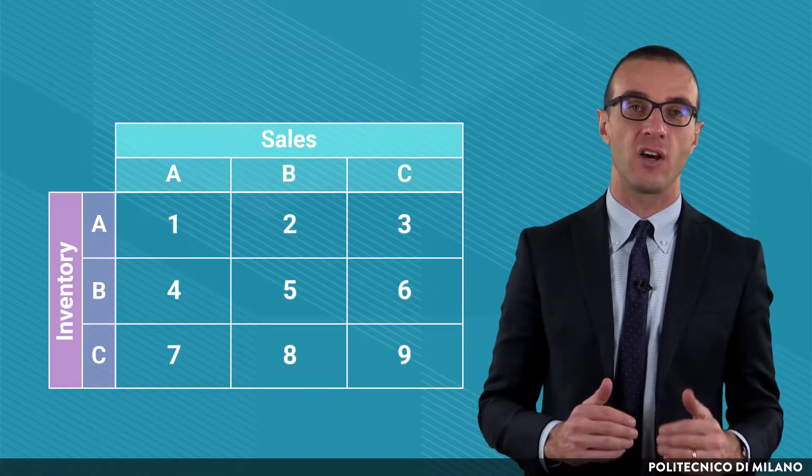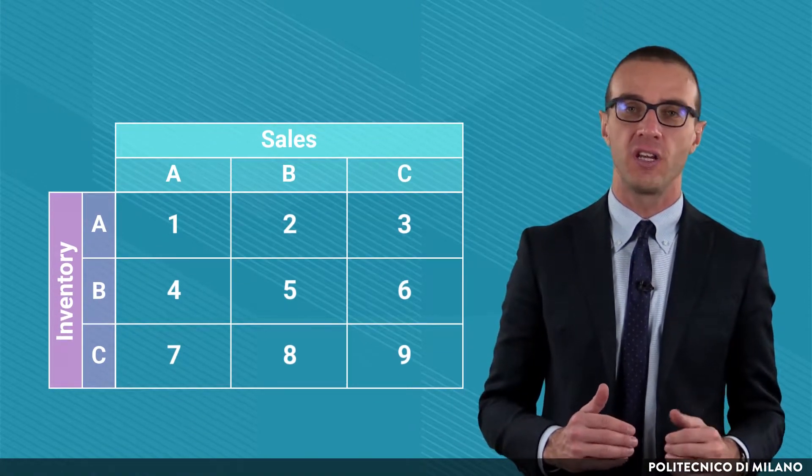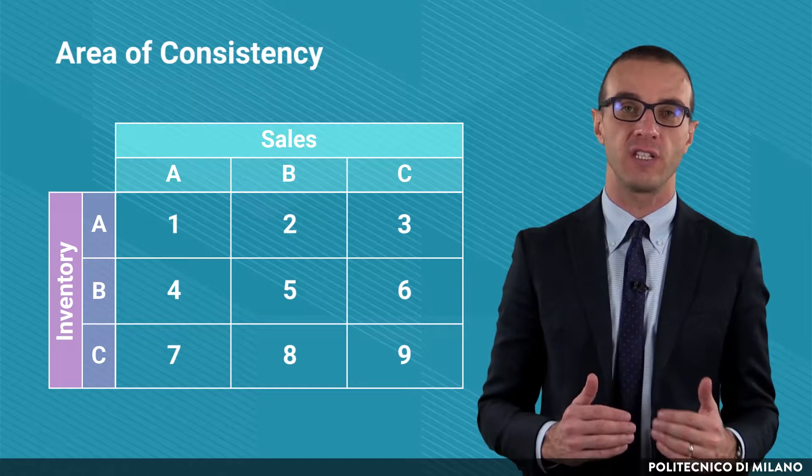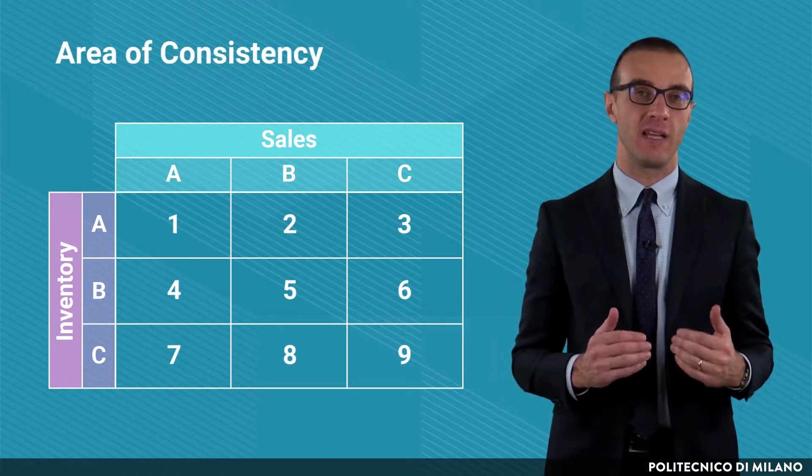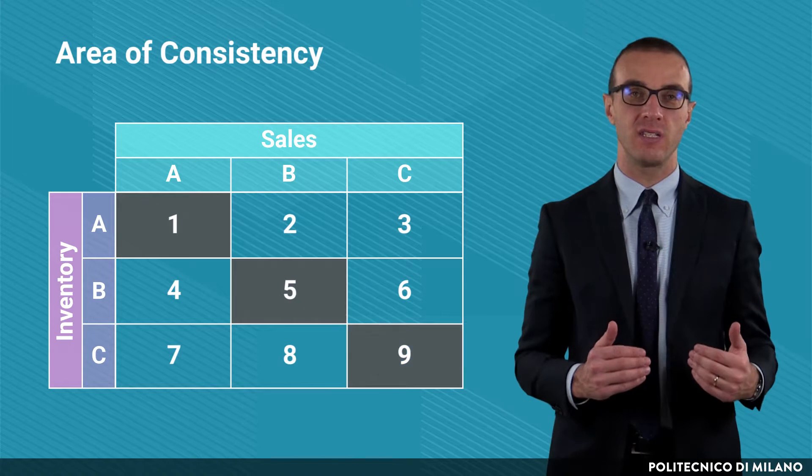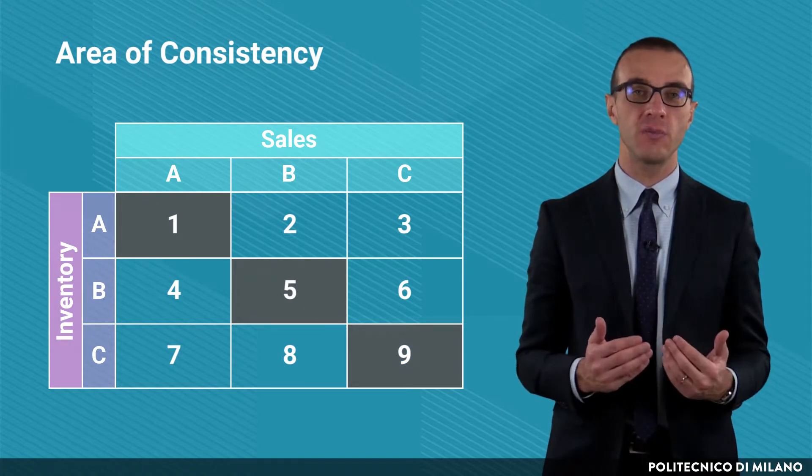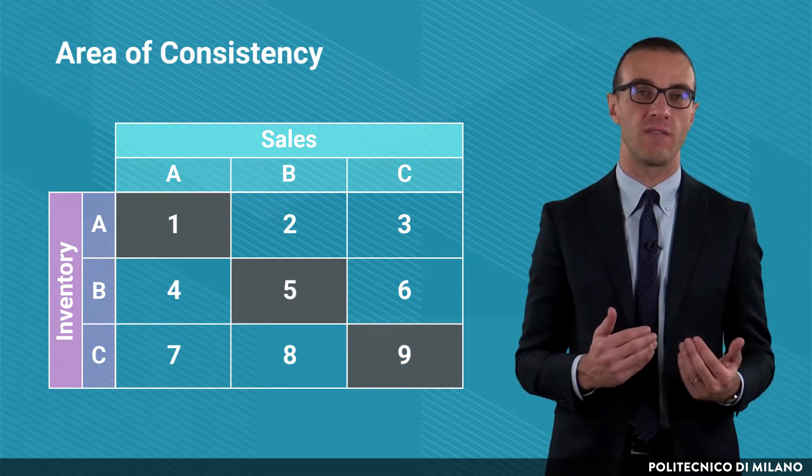The cluster of classes along the main diagonal of the matrix corresponds to the area of consistency. Indeed, it is composed by the AA, BB, and CC items for which there is coherence between the value of inventory and the value of the sales.